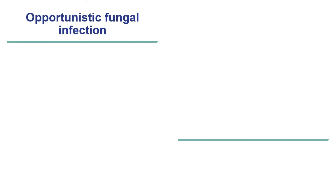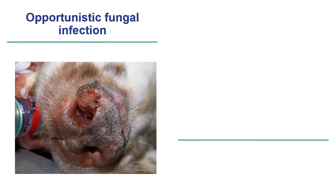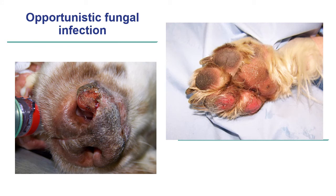Here we see a case of an opportunistic fungal infection in a young Springer Spaniel, initially presented because of ulceration involving the nasal planum, with differentials including immunomediated diseases, followed by onset of ulcerations on the footpads. Following histopathology, fungal elements were found in the skin of both the nasal planum and the footpads. An important factor in the history is that this dog was on immunosuppressive treatment — a combination of prednisolone and cyclosporine for an immunomediated neurological disorder.